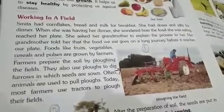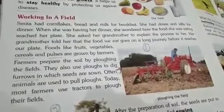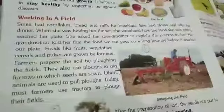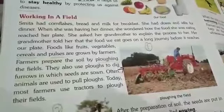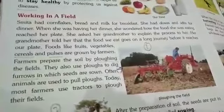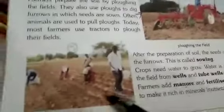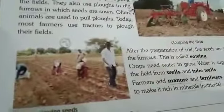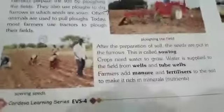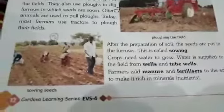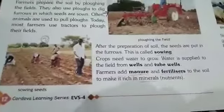After plowing, they make furrows in which seeds are put in the earth for growing plants — you can see this in the second picture. After plowing the field, seeds are put in the furrow. This process is called sowing.